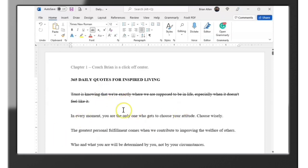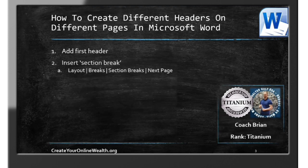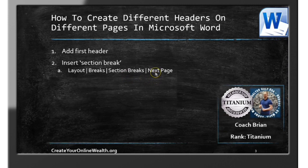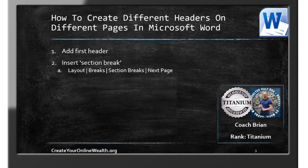Double-click in the body area and that will unselect the header. Now let's go to step two, which is going to be insert a section break. For this click path, we're going to go to the Layout tab, then Breaks, then Section Breaks, then Next Page. I wanted to highlight that because depending on the defaults of your software, you might be seeing different things, so understand that this is what you're going to want to look for.